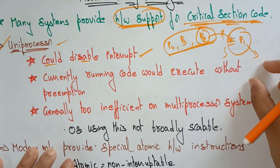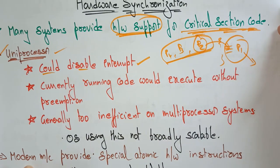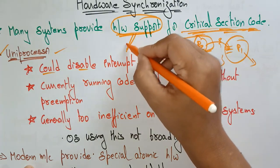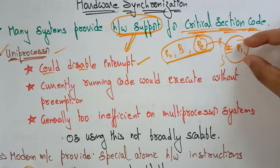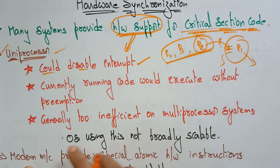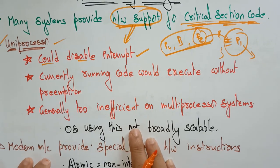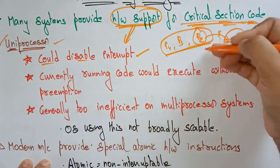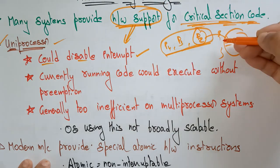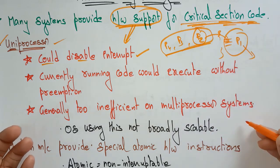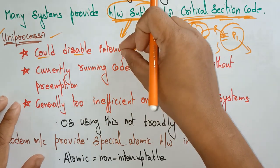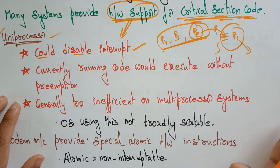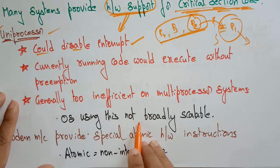Whenever P1 exits the critical section code, another process will enter into the critical section code. However, this approach is generally too inefficient on a multiprocessor system. If it is a uniprocessor it's okay, but if you're talking about a multiprocessor system, disabling the interrupts and running the current code is not possible, because the operating system using this is not broadly scalable.